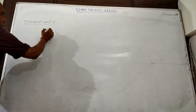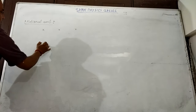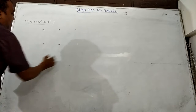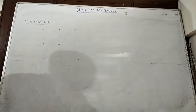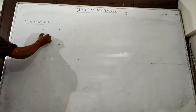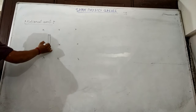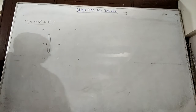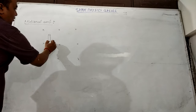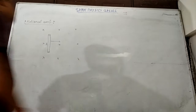Suppose we say this is a uniform magnetic field and there is a conductor of length L. Now it is moved towards this side or this side with a certain velocity.